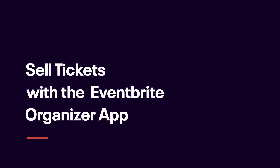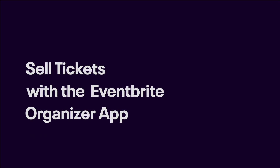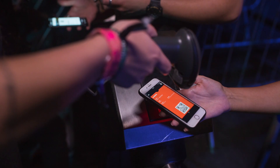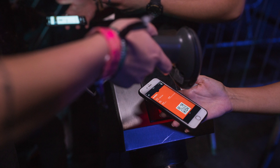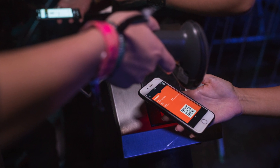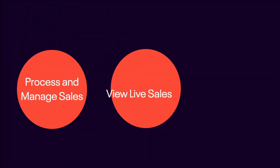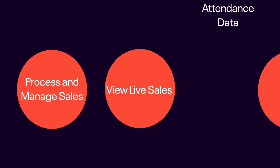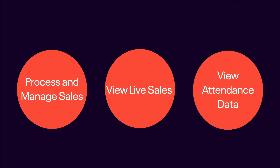This video will show you how to set up your Apple or Android mobile device to sell tickets. The Eventbrite Organizer app allows you to continue to make sales at your event even after it has started. Event organizers can process and manage sales, view live sales, and attendance data directly from the Organizer app.